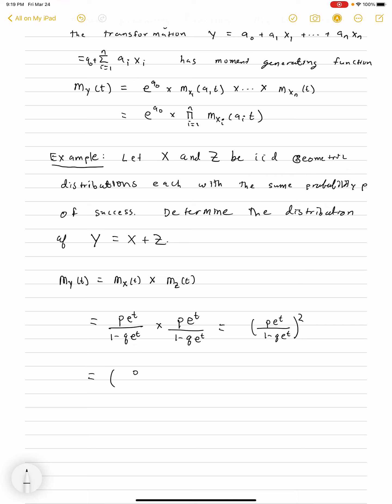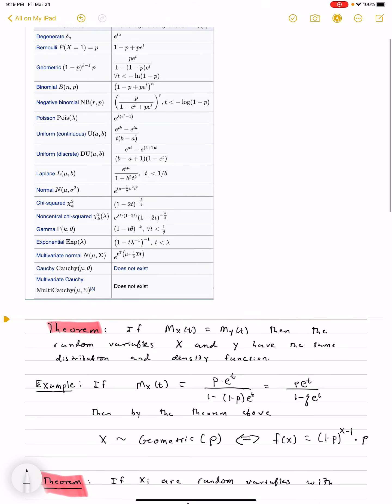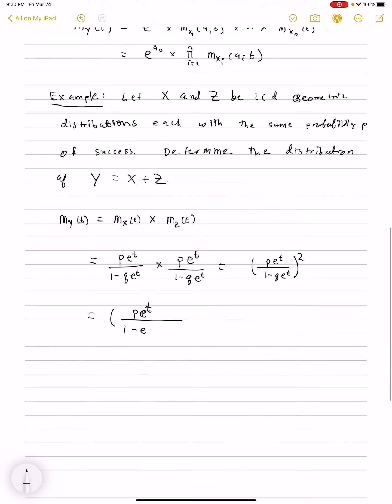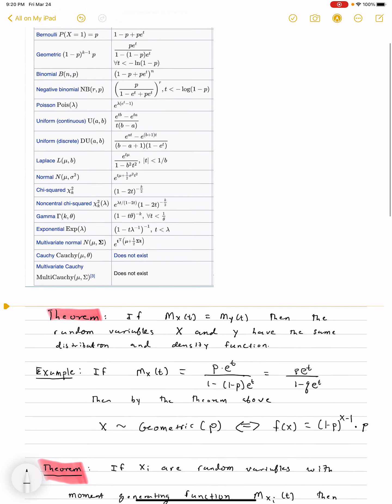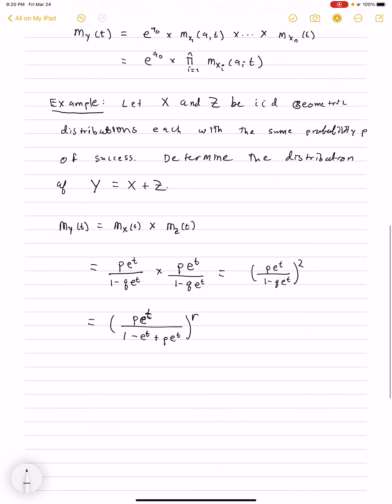We're going to have that, if I copy this down right, p e^t divided by 1 minus, and let's look carefully, 1 minus e^t plus p e^t raised to the rth power. Now this looks super familiar to me.